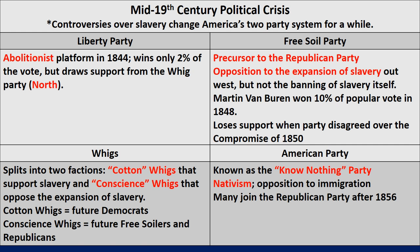As we get close to the Civil War, things start to divide among political parties. Controversies over slavery would change America's two-party system for a good while. Starting with the Liberty Party — an abolitionist platform in 1844 — they won 2% of the vote but drew much support from old Whigs and the North. You also have the formation of the Free Soil Party, the precursor to the Republican Party. They opposed the expansion of slavery, but not outright banning slavery itself. Martin Van Buren won 10% of the popular vote in 1848, but the party lost support when it disagreed over the Compromise of 1850.